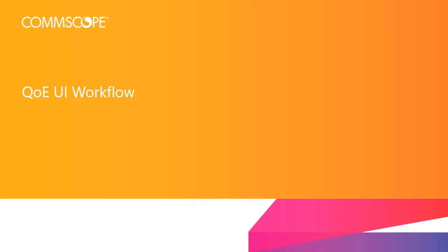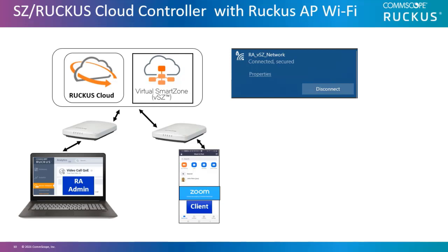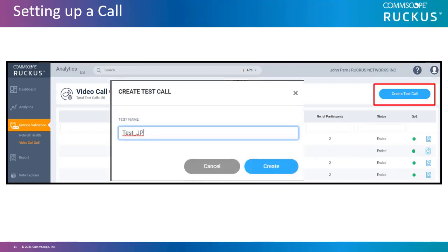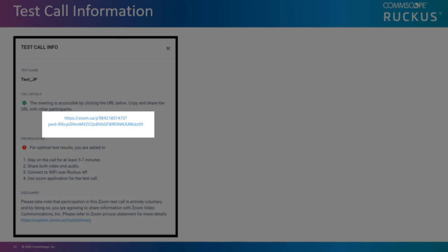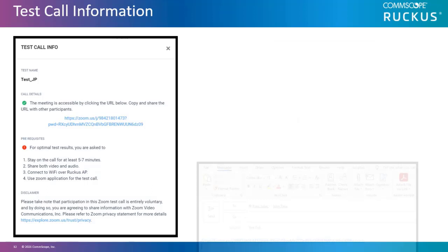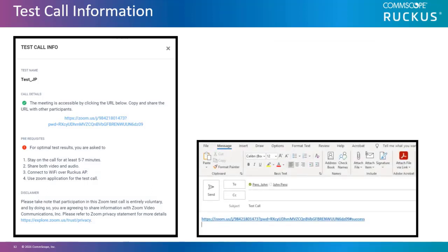Let's go through a few screen grabs to see what the user interface workflow looks like. Before setting up and launching the Zoom call, make sure that both the RA admin and the client are on a Ruckus SmartZone or Ruckus Cloud Wi-Fi network using Ruckus APs. The administrator logs into Ruckus Analytics and then selects Video Call QoE under the Service Validation tab. From here, they would click on Create Test Call and enter a test call name. This will bring up a screen with the RA's Zoom account and a meeting URL. You can click on the URL and it will give you the option of how to email the link — either the default email, Gmail, or Yahoo Mail. In this case, selecting default email brings up Outlook, where you put in the email address of the client and send the email.